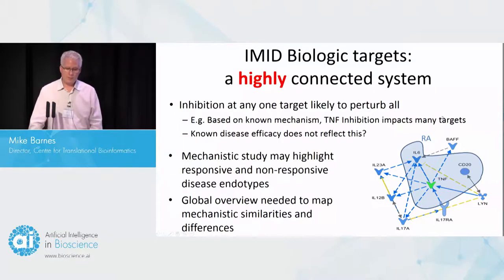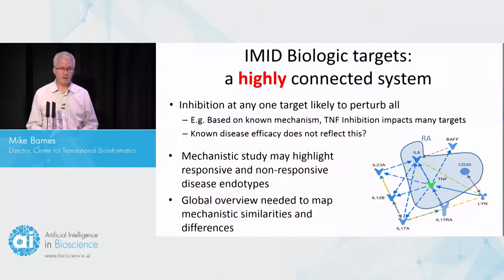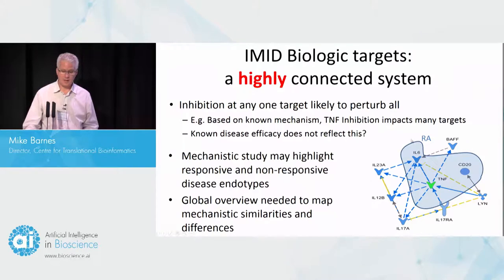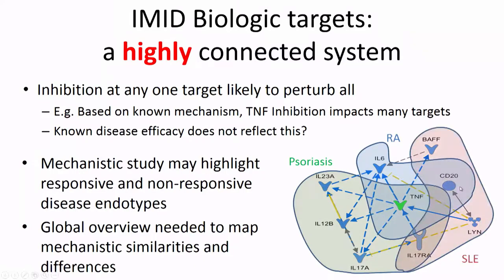Biologic targets are really very highly connected. If you look at TNF, all of these direct interactors are targets of successful biologics in IMIDs — RA targets, psoriasis targets, and lupus targets. If you run this through a pathway mechanism model — this is actually an ingenuity pathway — it predicts that if you inhibit TNF, you would downregulate all of these targets. To some extent we see that, but not completely.